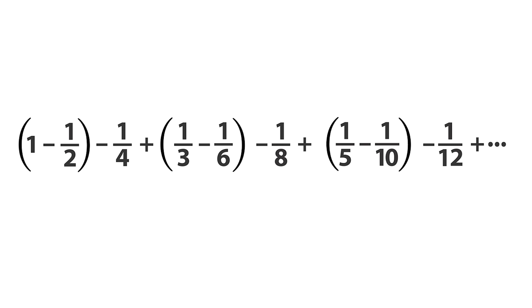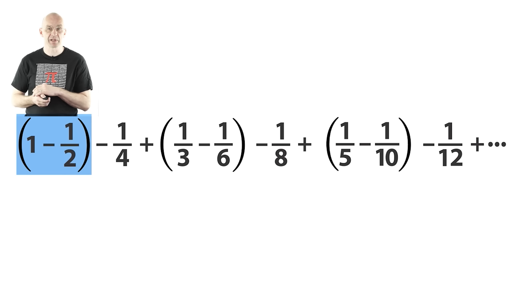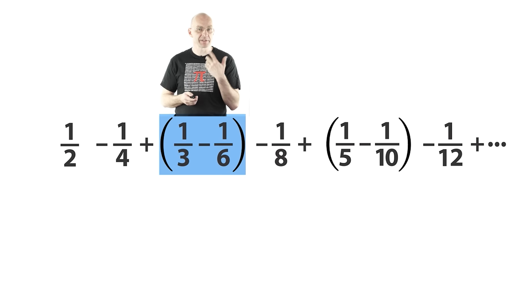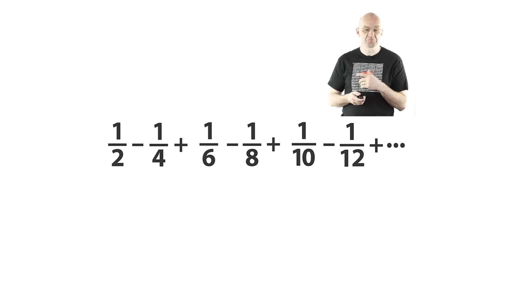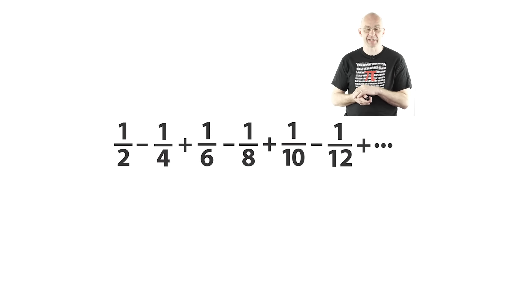Now we're going to work our way through the brackets. The first one here, 1 minus 1/2 is 1/2. 1/3 minus 1/6 is 1/6, and so on. So we've just rearranged the terms and re-bracketed them a little bit. And that should not change anything about the sum of this thing, right?